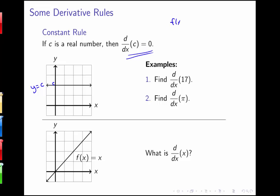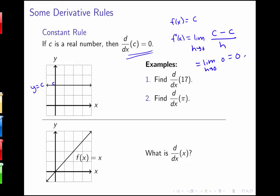We could also prove this using the definition of the derivative. If f of x is equal to the constant c, then f prime of x equals the limit as h goes to 0 of f(x+h), which is c, minus f(x), which is c, all over h. We'd be looking at the limit as h goes to 0 of 0, which gives us 0. So we can prove this rule using both the definition of the derivative and just using what we know about slope.